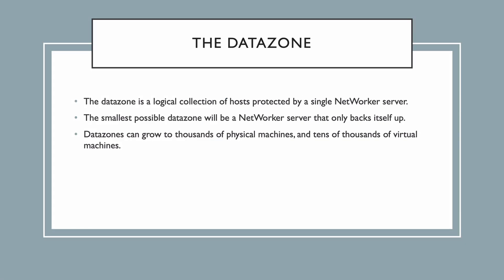Starting with the data zone: the data zone is a logical collection of hosts that are protected by a single NetWorker server. So every NetWorker environment you come across will have at least one data zone. A data zone can actually be as small as a single NetWorker server that just backs itself up. However, data zones usually end up being larger than this, and you can get very large data zones consisting of thousands of physical machines and tens of thousands of virtual machines.